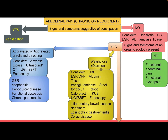Is there weight loss with or without diarrhea? Consider complete blood count, ESR, C-reactive protein, albumin, tissue transglutaminase, stool for occult blood, calprotectin, and KUB. Upper GI contrast with small bowel follow-through and endoscopy should also be considered. Differential diagnosis includes inflammatory bowel disease, neoplasm, eosinophilic gastroenteritis, and celiac disease.